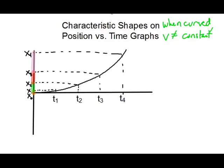So the way we'll describe our object's motion for a nice upward curve line, where it curves upward, is going to be a positive increasing velocity. It's getting faster and faster over time. It's still going in the positive direction — remember, our positive direction is upward — so it's in the positive direction and it's getting faster and faster.